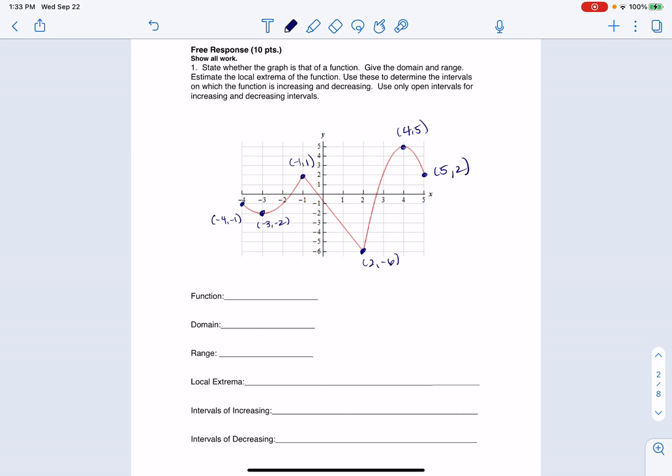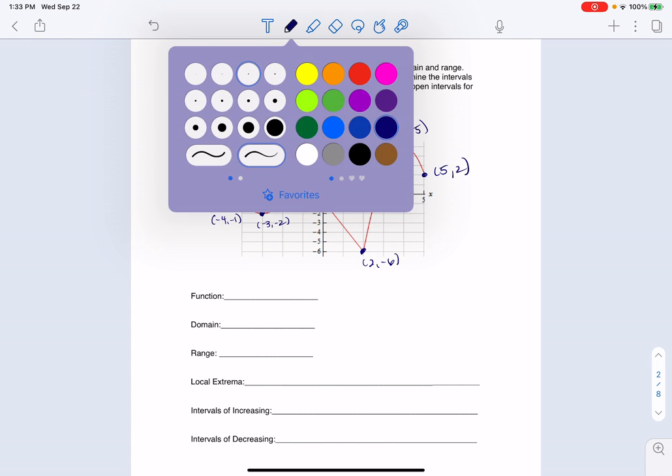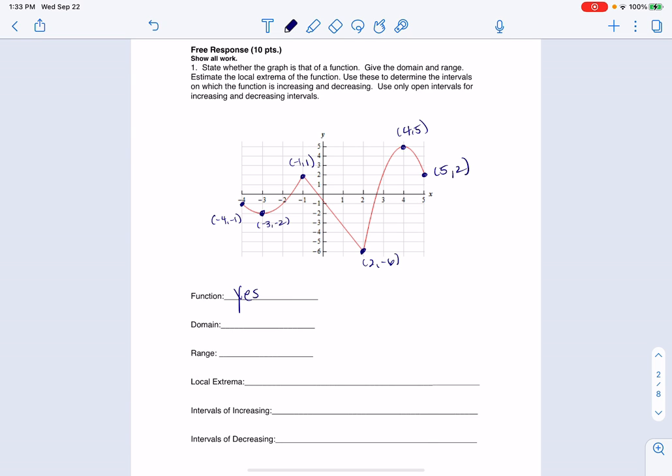So we start with the first trait here. Is this a function? To be a function, you have to pass the vertical line test. And you can see that this relation does. I'm going to erase all of those little lines I just drew. So I would say yes, that's the answer here, yes.